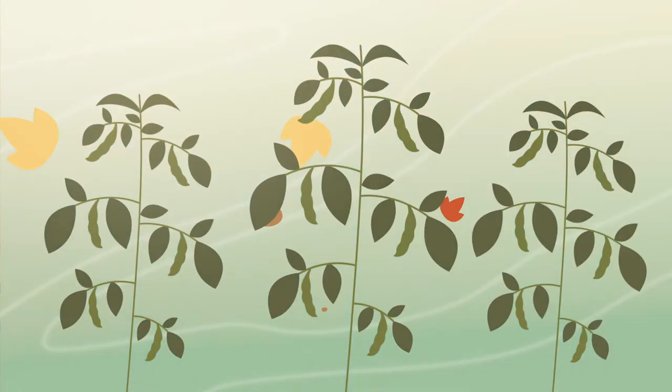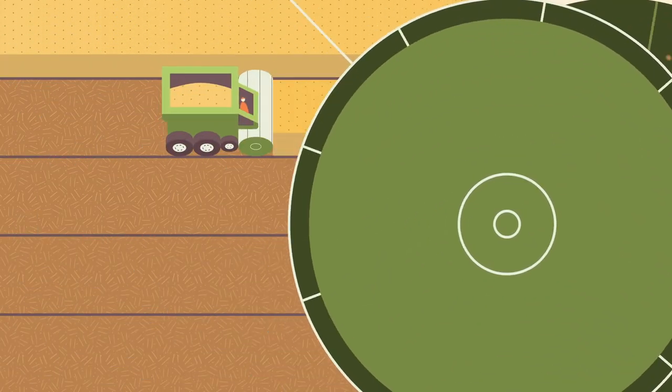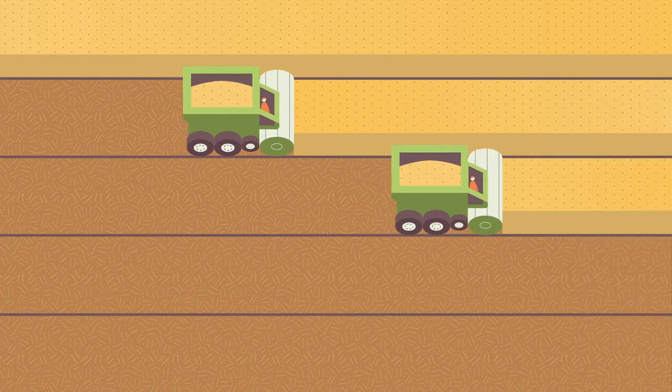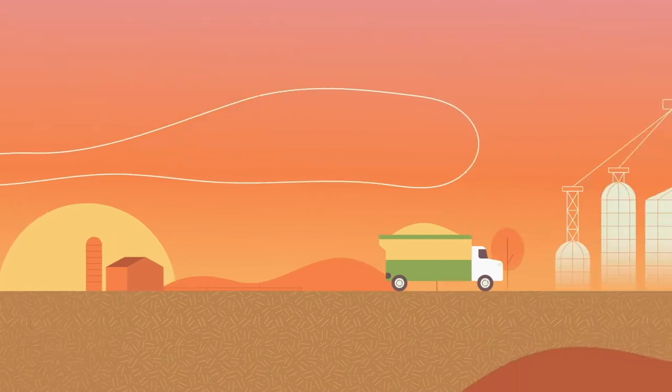When fall arrives and all those seeds have grown into fully mature soybean plants, they are ready to be harvested. Once the beans have been carefully harvested, they are then loaded into a truck and sold to a grain elevator facility.